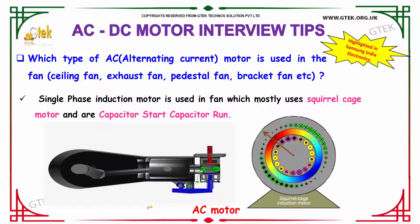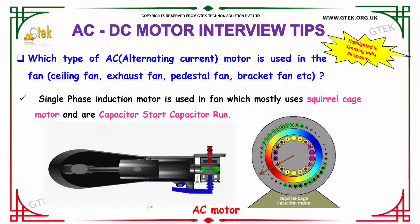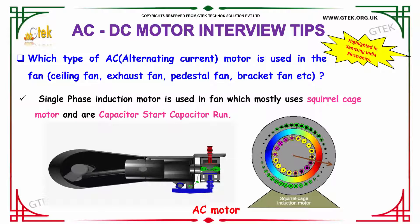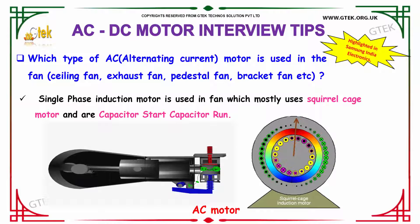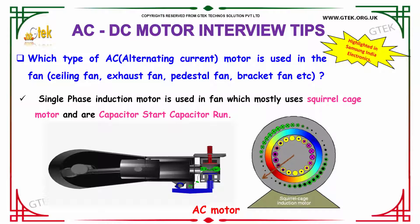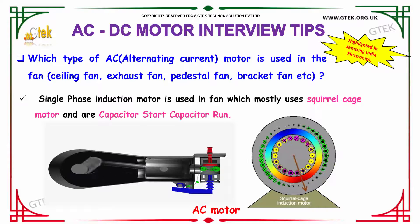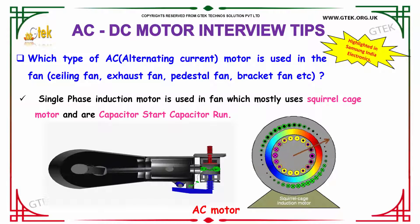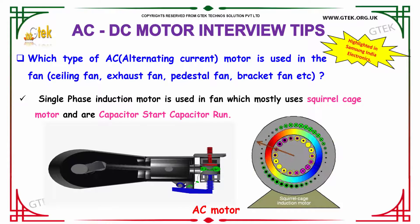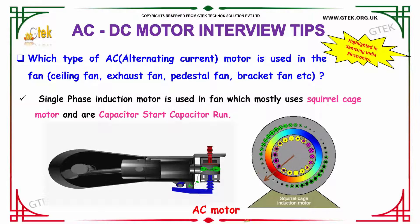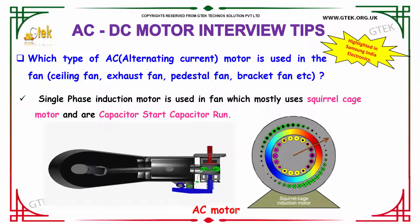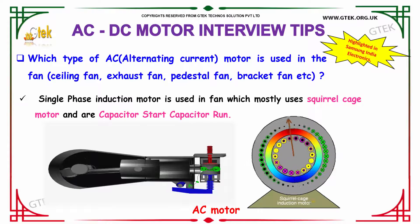Which type of alternating current motor is used in the fan — it might be a ceiling fan, exhaust fan, pedestal fan, bracket fan, and so on? The answer is single phase induction motor. The single phase induction motor is used in the fan, which mostly uses the squirrel cage motor and capacitor start capacitor run. You can see here how the AC motor is shown along with the squirrel cage induction motor.